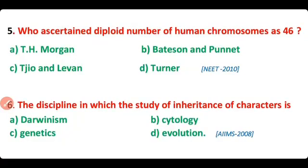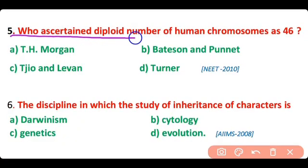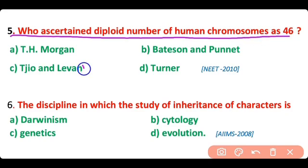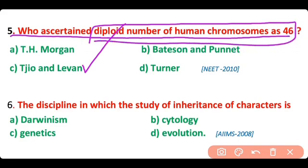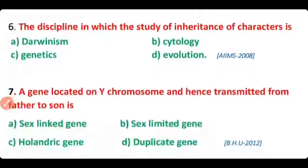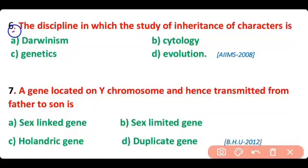Question number 5. Who determined the diploid number of human chromosomes as 46? So correct answer is option C. TJO and Levan described the diploid number of human chromosomes as 46.